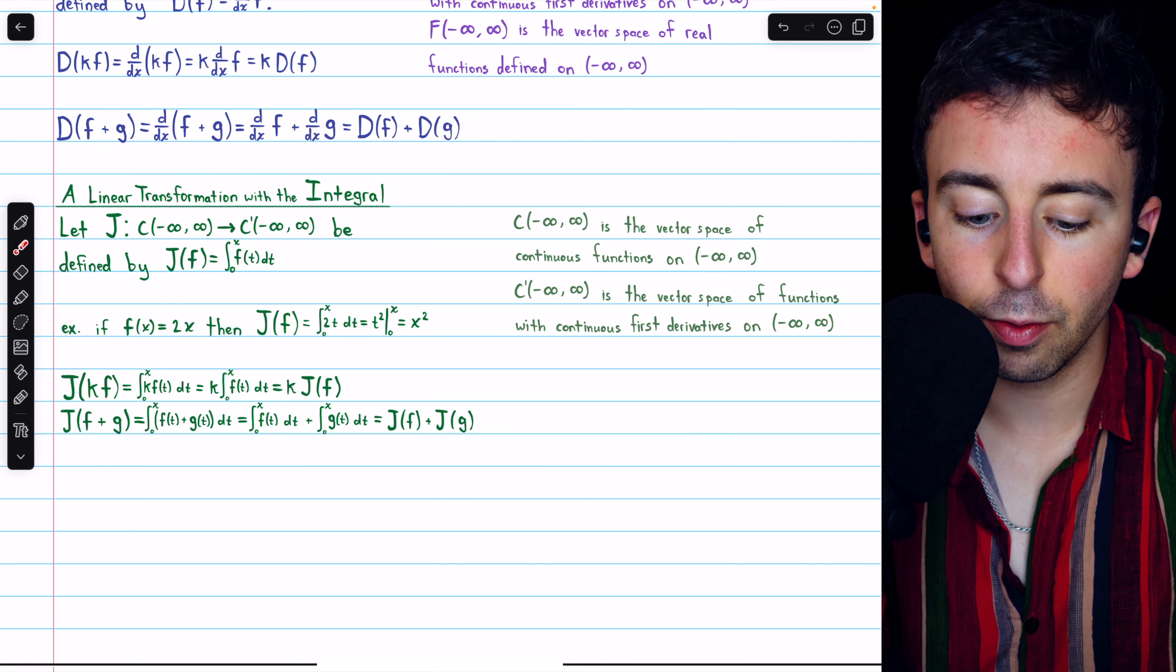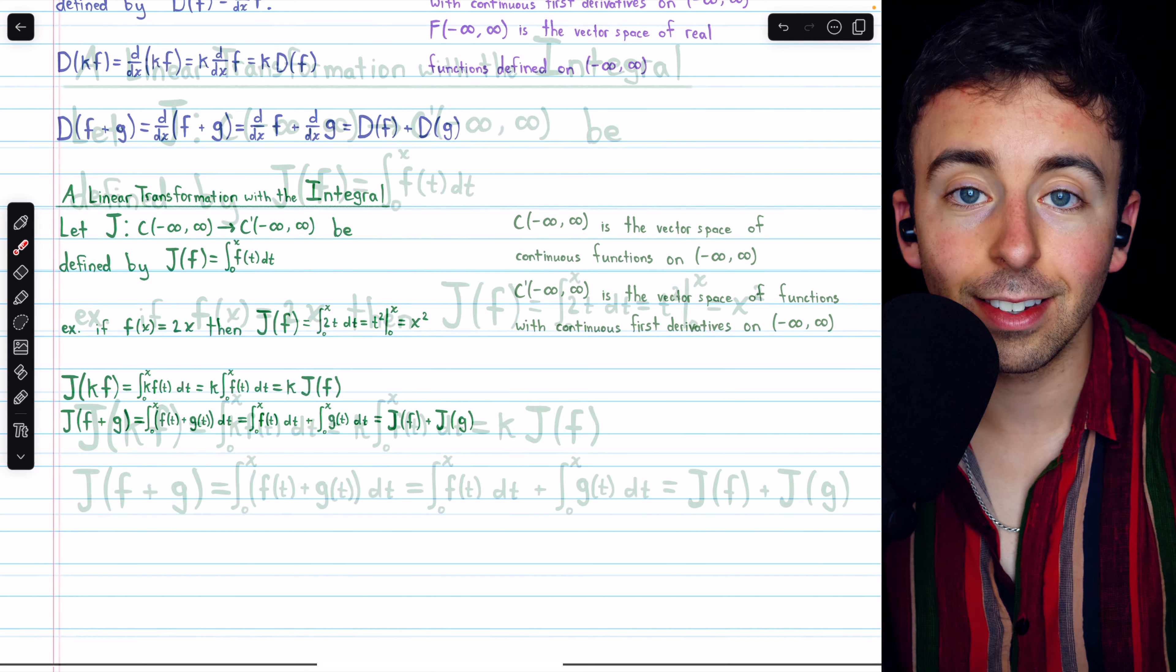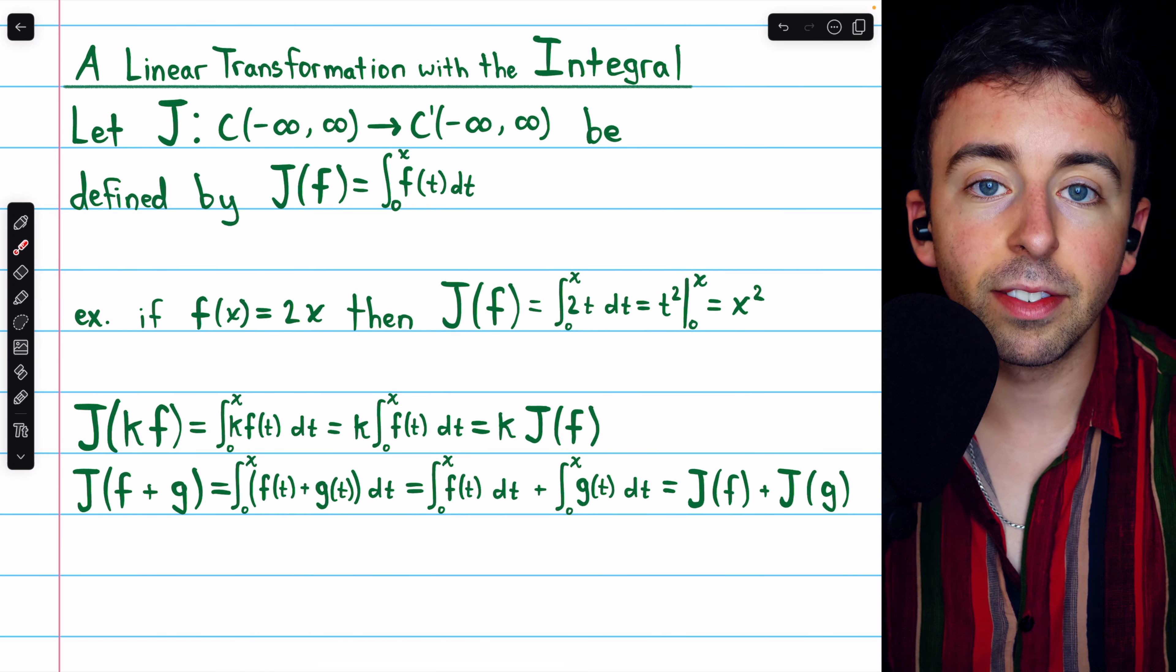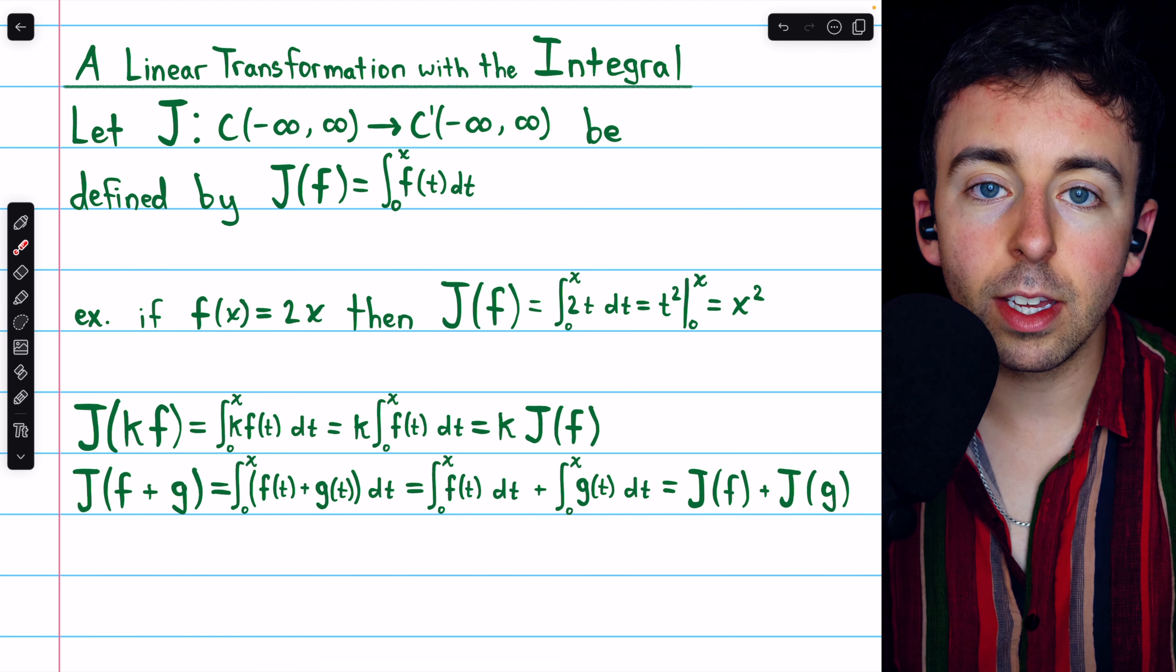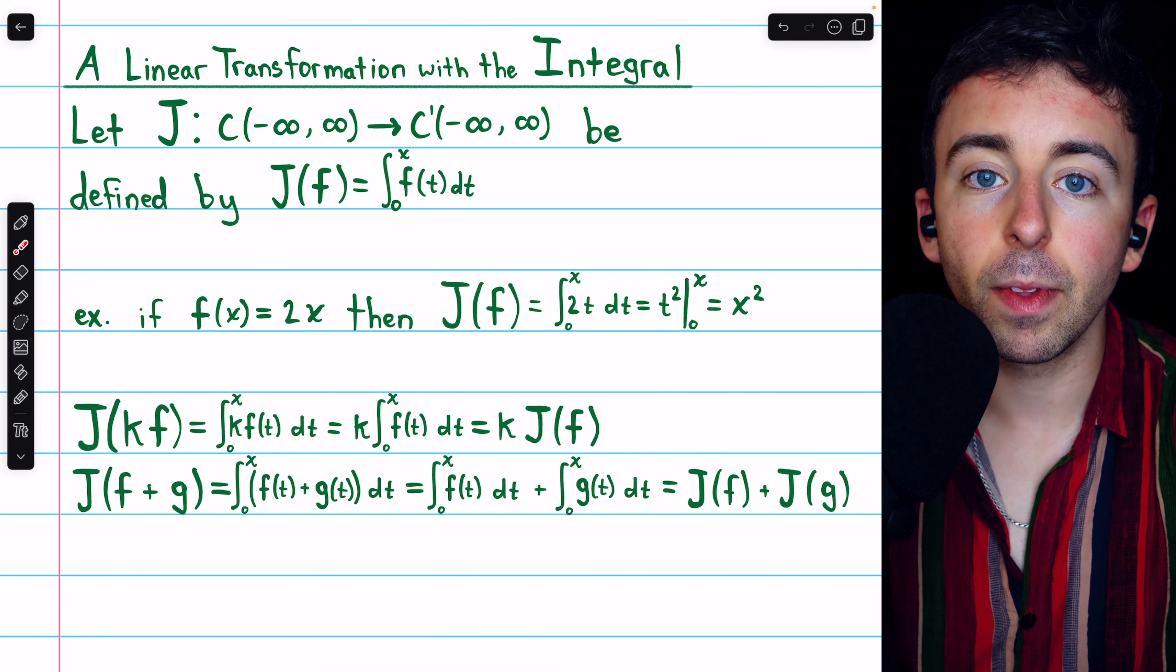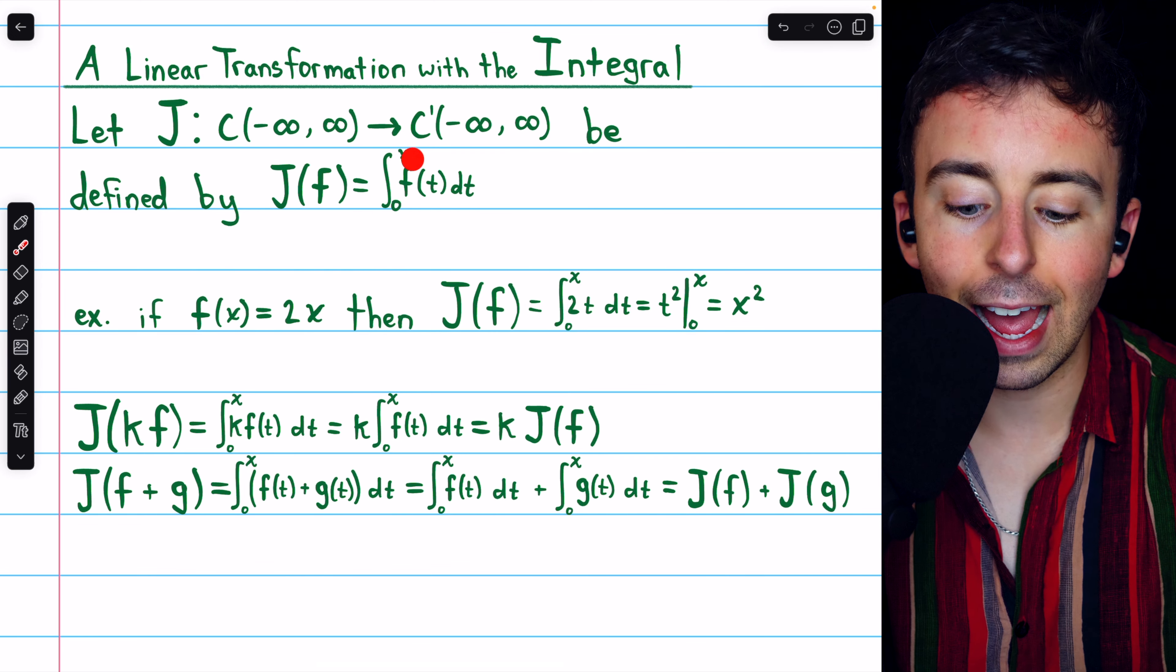J of f is the integral of f from 0 to x. This means that our mapping J will take a function f as an input and it will map it to the accumulation function, which just calculates the area under the input function f from 0 to x.